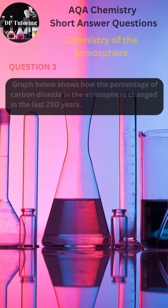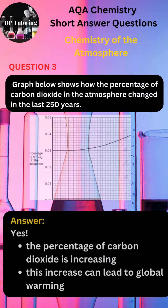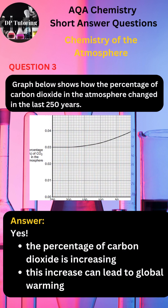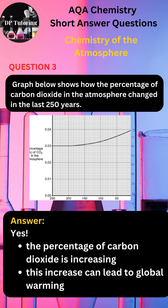Answer for question 3. Yes, they should be concerned based on the shape of the graph. Reason 1: the percentage of carbon dioxide is increasing. Reason 2: this increase can lead to global warming.